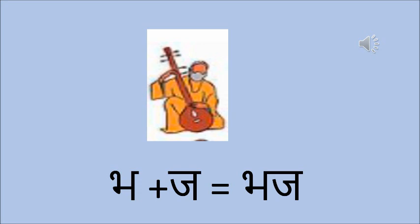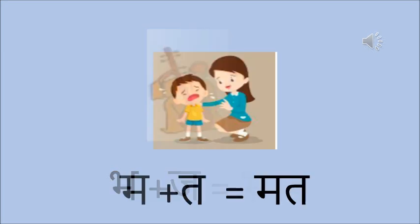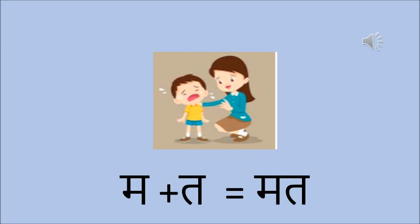Bhaj — Bhaj means bhajan karna, Bhagwaan ka naam lena — to sing devotional songs and take God's name. The next one is Mat — Ma and Ta together make Mat. Mat means 'don't' — don't cry, mat ro. So the different words we have done are: Ttat, Than, Das, Dhan, Nal, Path, Fan, Bas, Bhaj, and our last one is Mat.